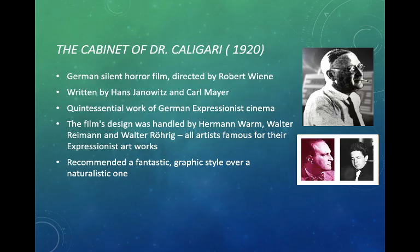The Cabinet of Dr. Caligari came out in 1920. It was a German silent horror film directed by Robert Wien and written by Hans Janowitz and Karl Mayer. It is considered the quintessential work of German expressionist cinema. The film's design was handled by Hermann Worm, Walter Riemann, and Walter Orrisch, all famous for their expressionist artworks. They recommended a fantastic and graphic style over a naturalistic one.